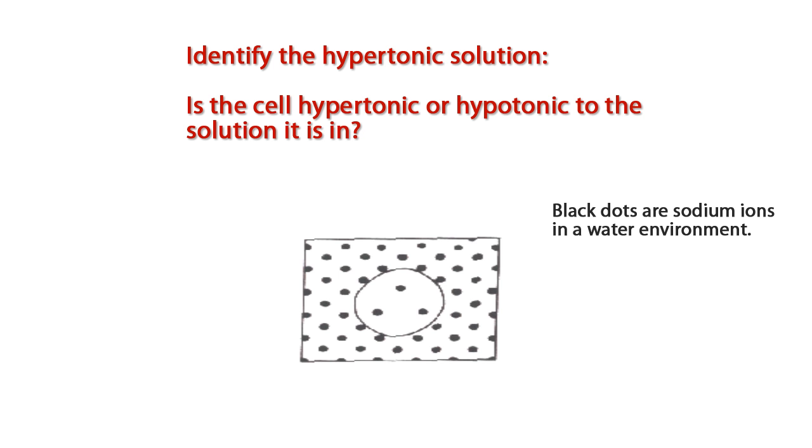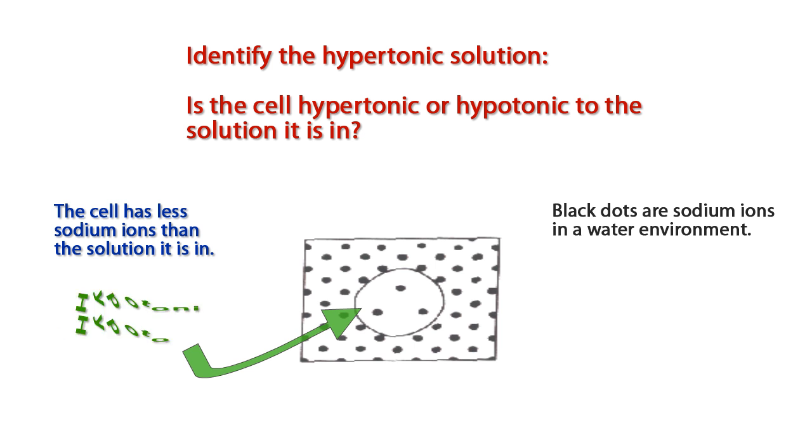In this diagram, we can see that the red blood cell has less sodium ions than the surrounding fluid it is in. Therefore, we can conclude that the red blood cell is hypotonic to the hypertonic solution it has been placed in.